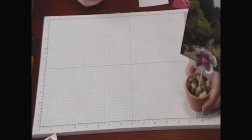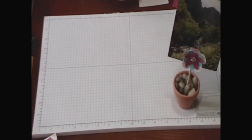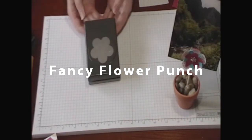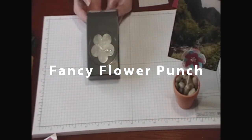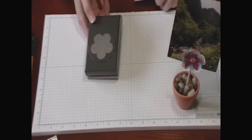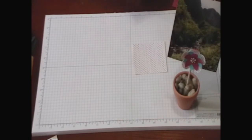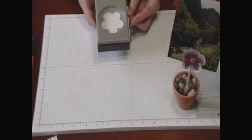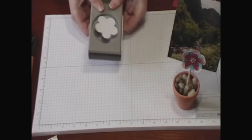It's really easy. First I'm going to use our large flower punch and this was in the Occasions mini catalog, but you can still get it. It's a catalog write-in so you can still order this. And I'm just going to punch a flower out of some of our Island Oasis Designer Series paper.